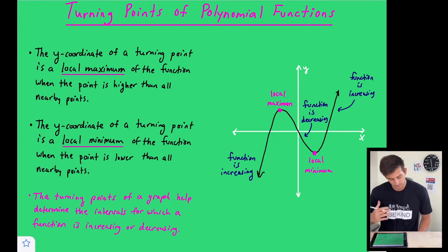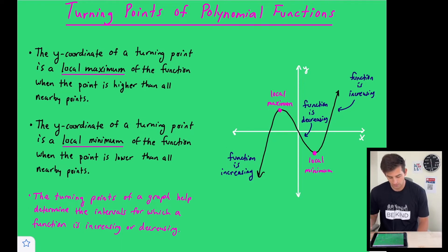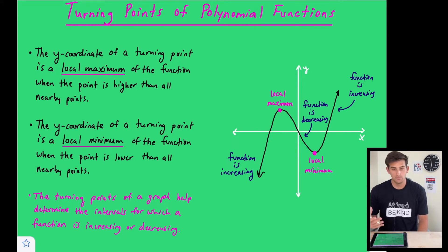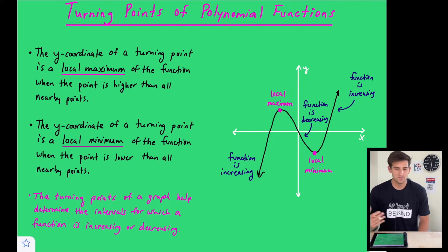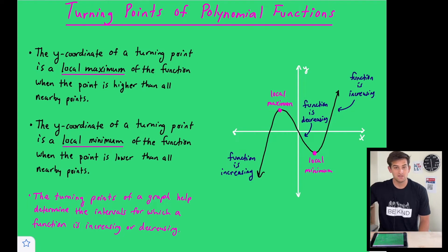Similarly, the y-coordinate of a turning point is a local minimum of the function when the point is lower than all nearby points. We call it a local maximum or minimum because it's not the only maximum or minimum of the graph, especially since in this case the graph is extending to positive infinity and negative infinity.